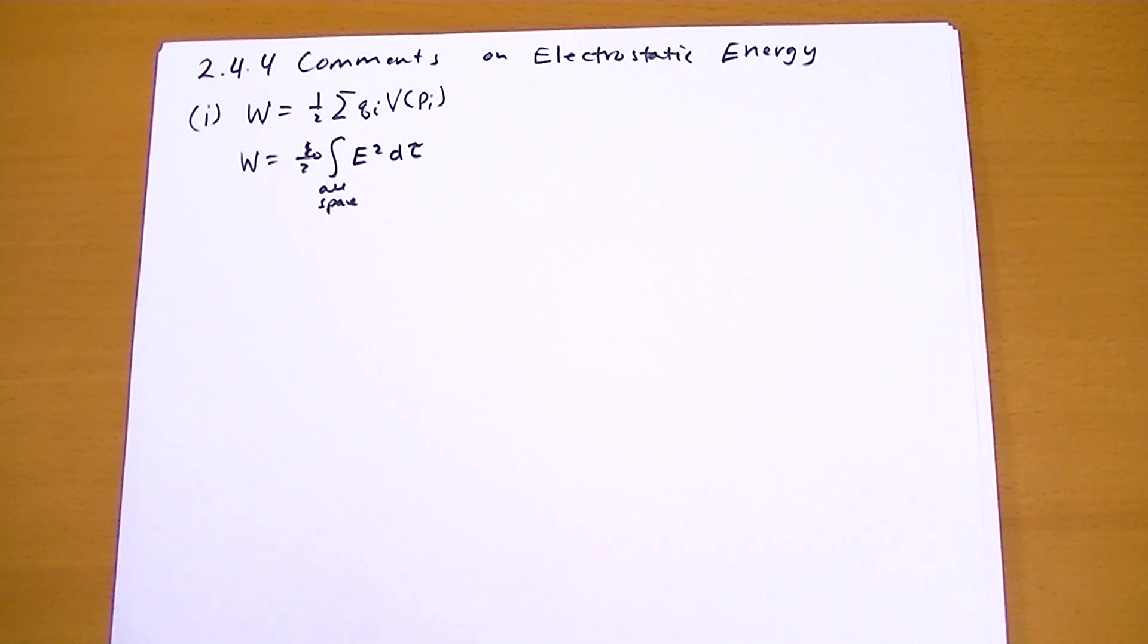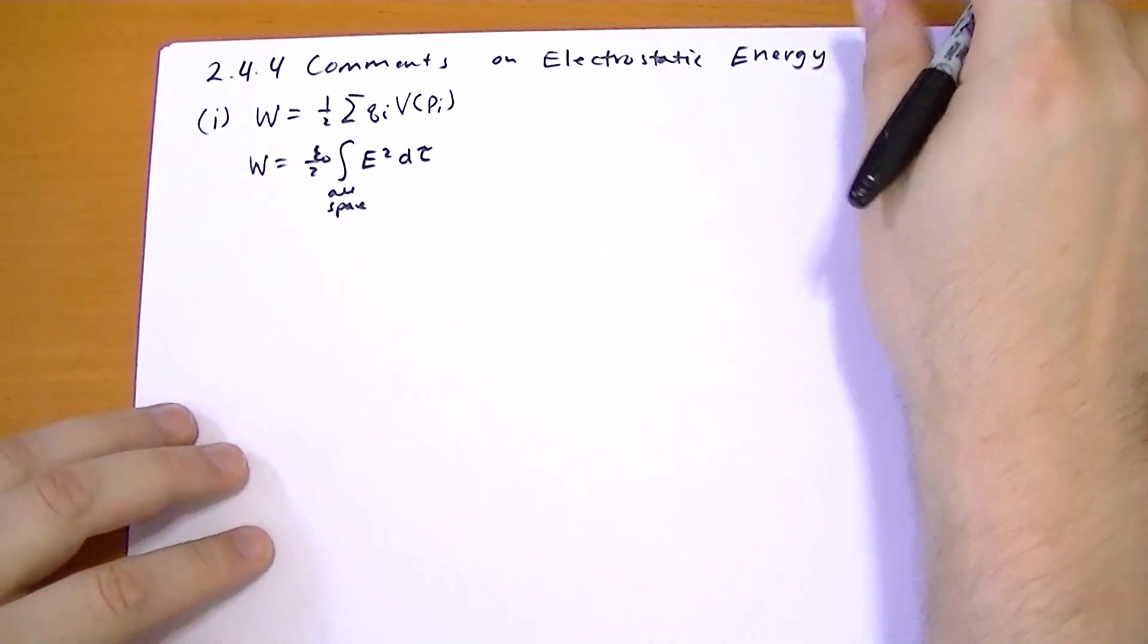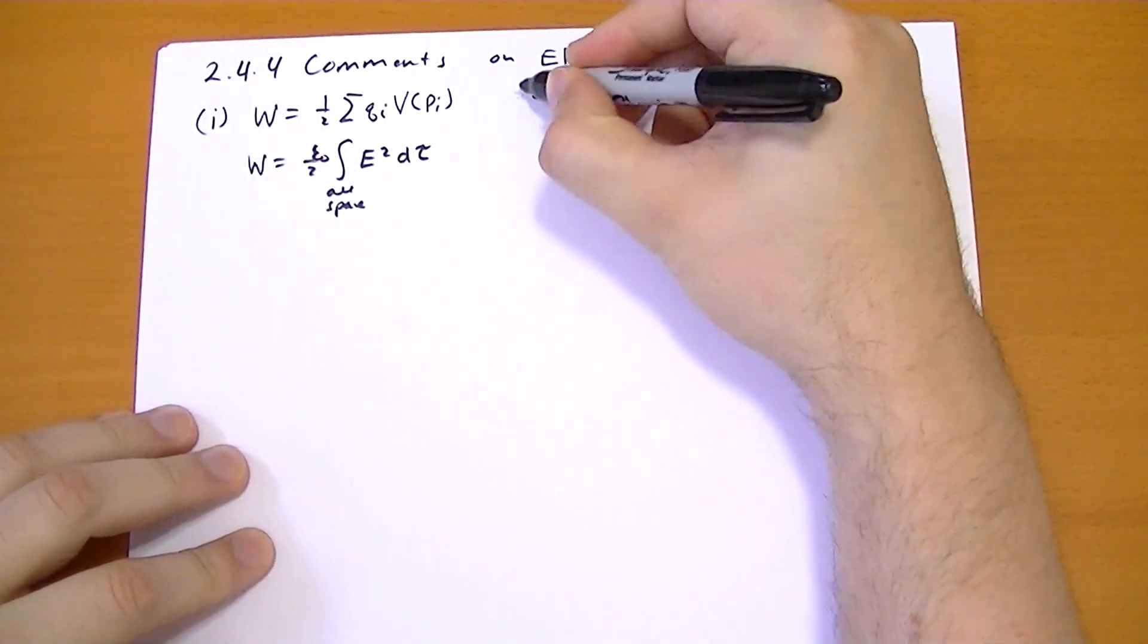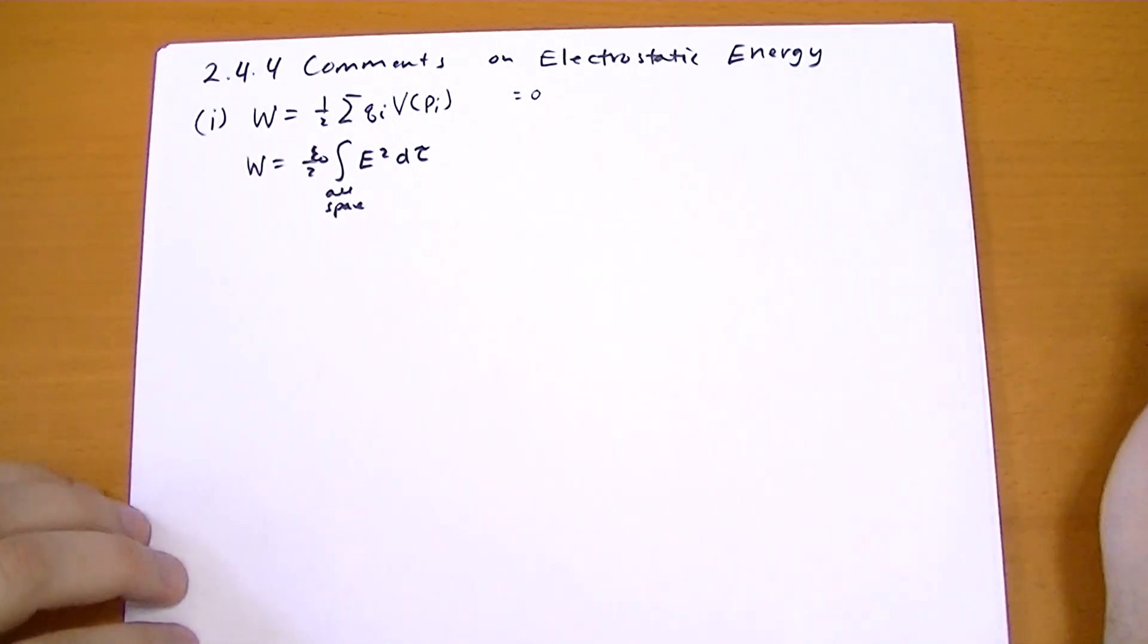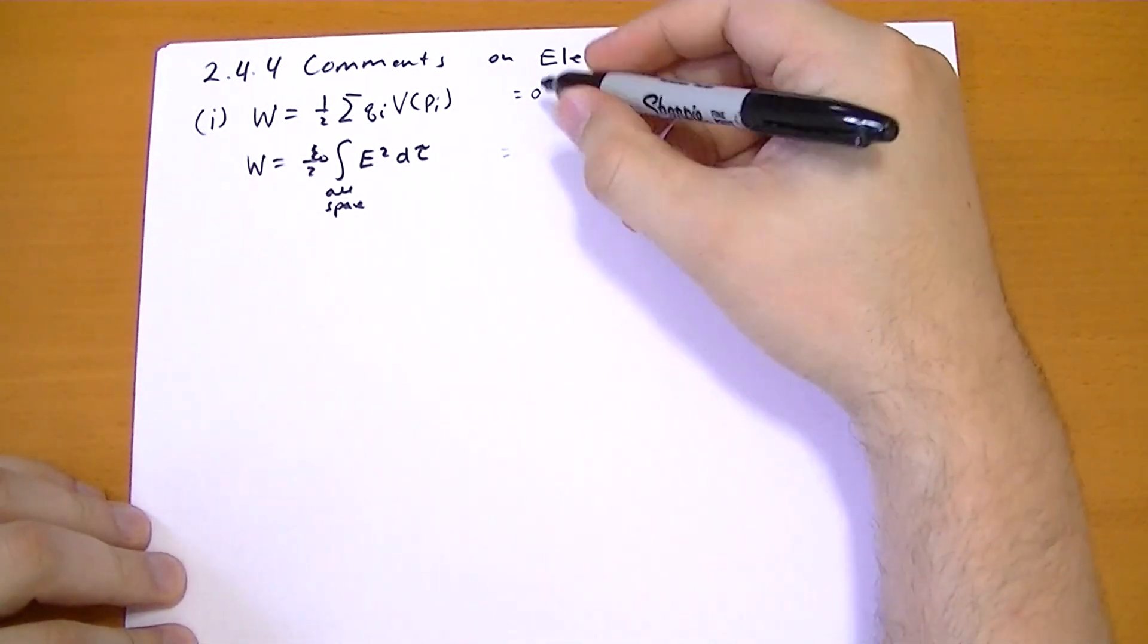So let's calculate really quickly what the energy of a point charge is. So if we moved a single point charge into the space, well this one would give you zero. Because when you're moving that charge into position, there's no other potential to work with.